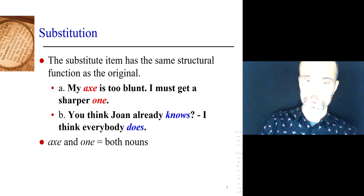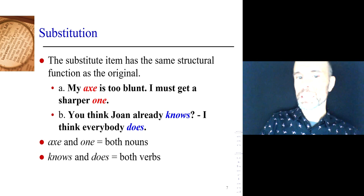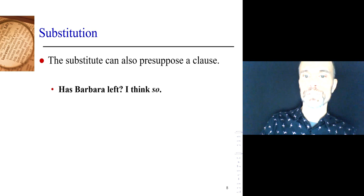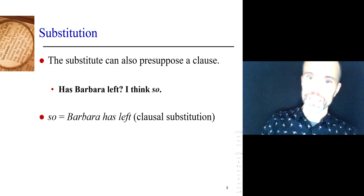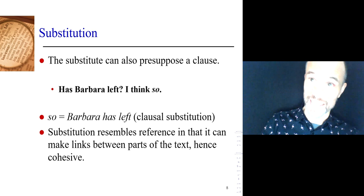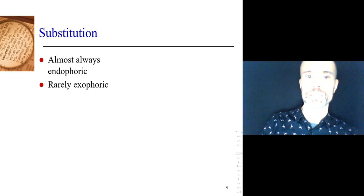Those are listed as nominal substitution, verbal substitution, and clausal substitution. Nominal is N-O-M-I-N-A-L — nominal for noun, verbal for verb, clausal for clauses. Like reference, substitution makes cohesive links between parts of the text. Like with reference, it's usually endophoric — it's usually within the text. How did you know what 'one' meant, what 'does' meant, what 'so' meant? You looked back in the text. Possibly it can be exophoric — not so much, but it's possible.